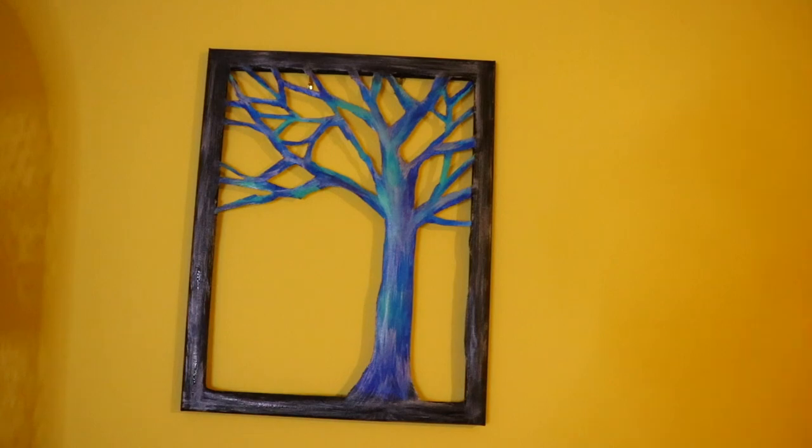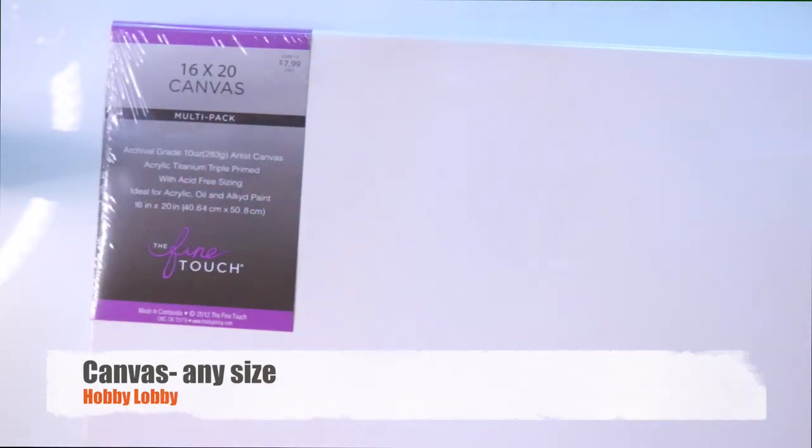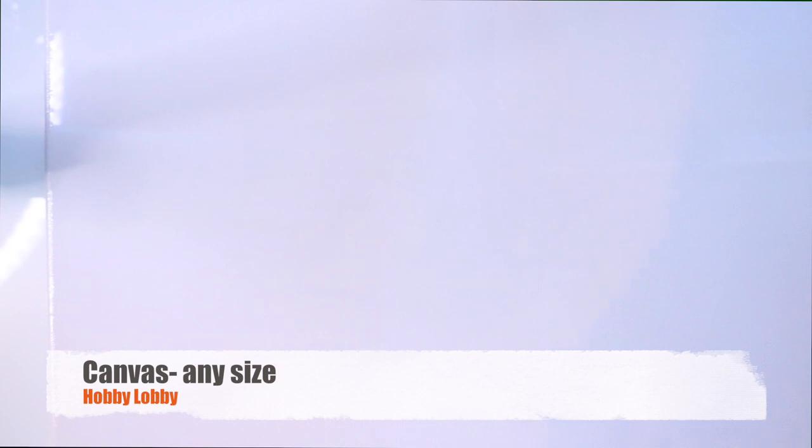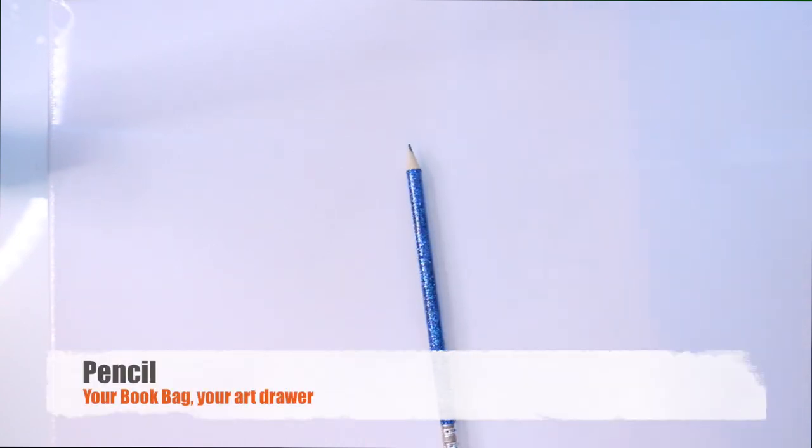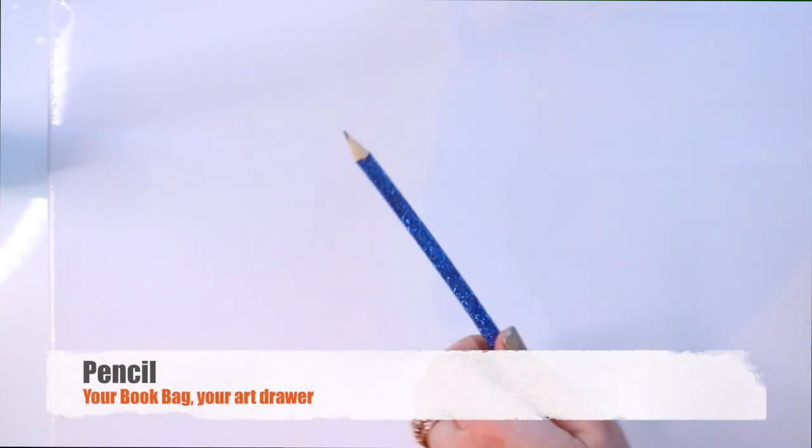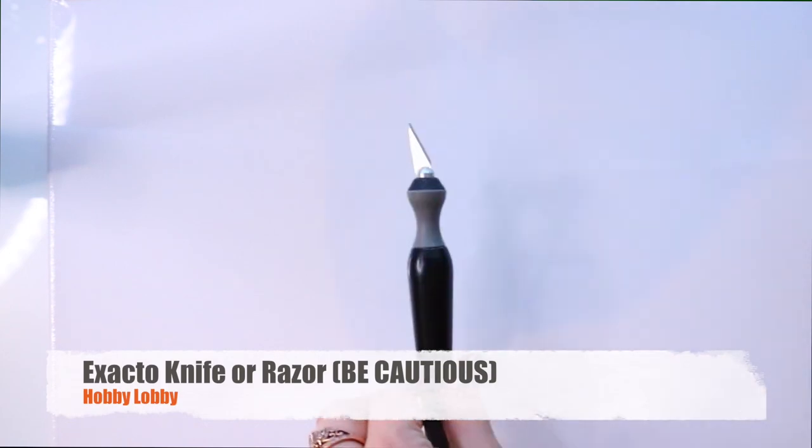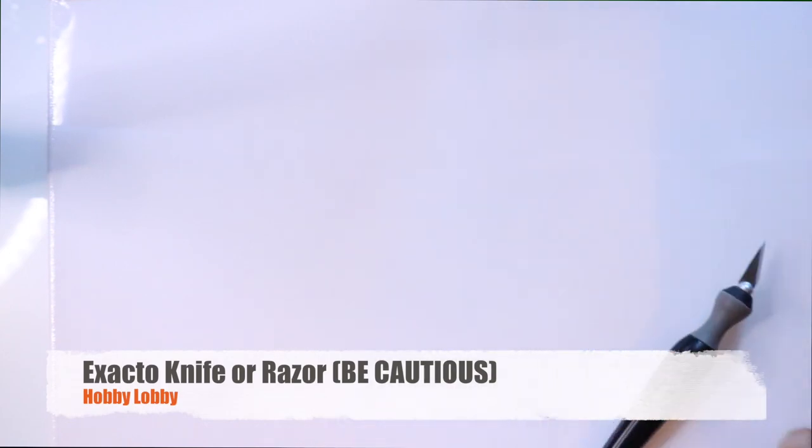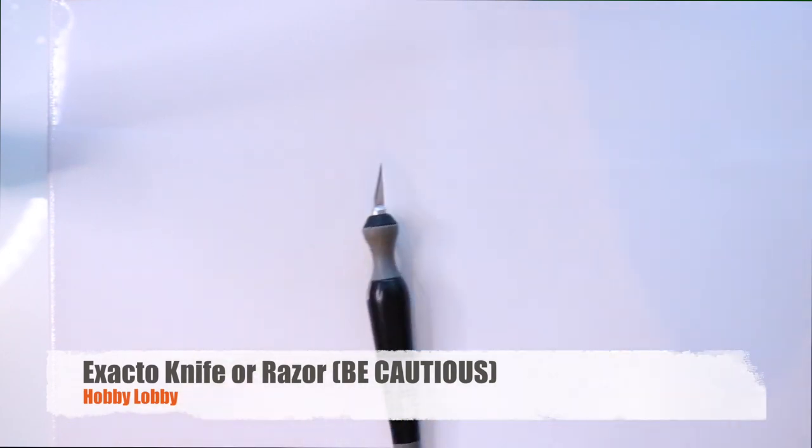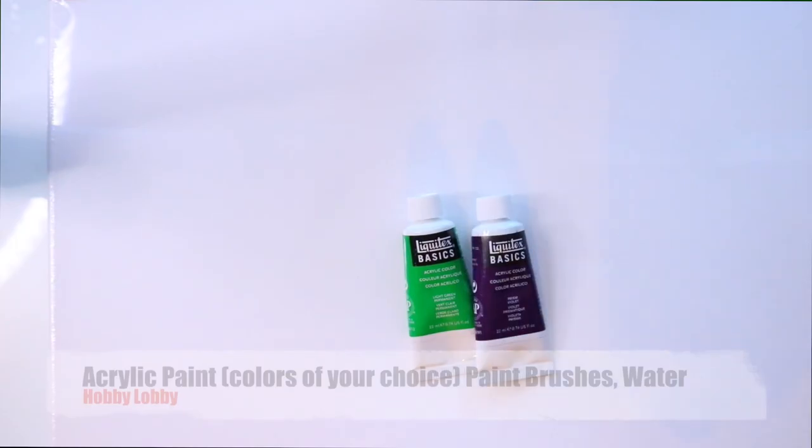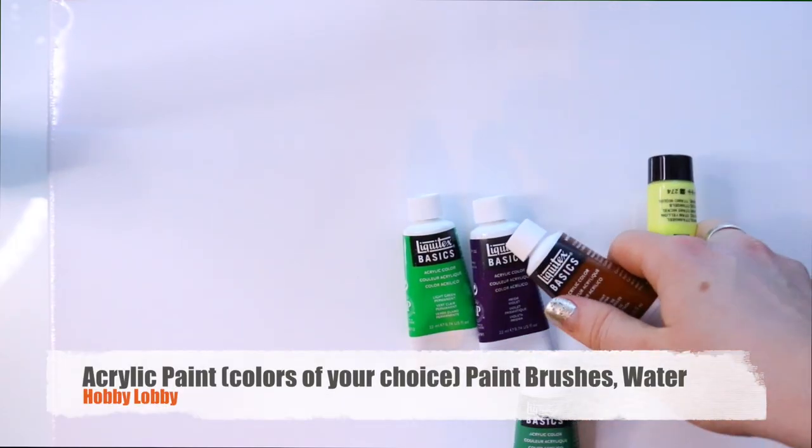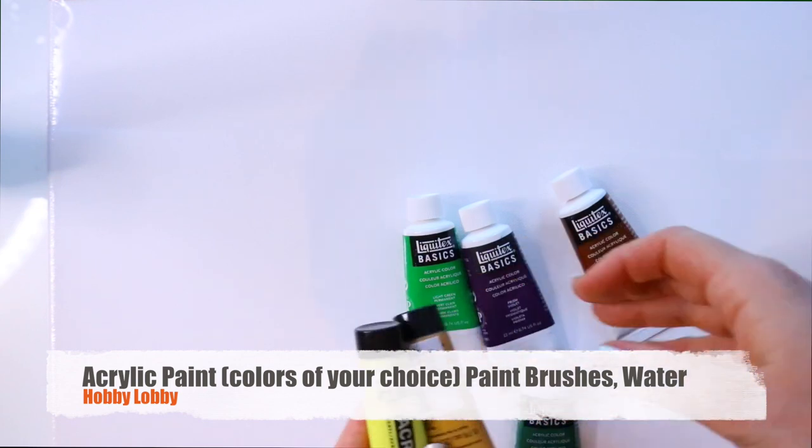First thing you're going to need is a canvas - I have a 16 by 20 canvas. You're going to need a pencil, and then for cutting out the canvas you're going to want an exacto knife or a razor, but just be super careful. I don't think scissors would really work in this situation. And you're going to need paint and some paint supplies, colors of your choice.